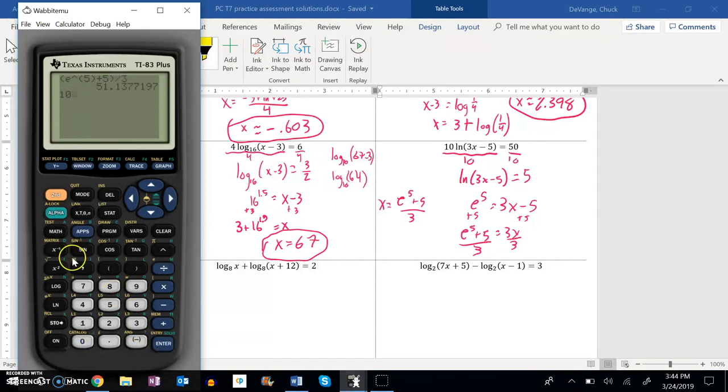Let me plug it back in and see if that works. 10 times the natural log of 3 times my answer minus 5. 50. Yep, that works.